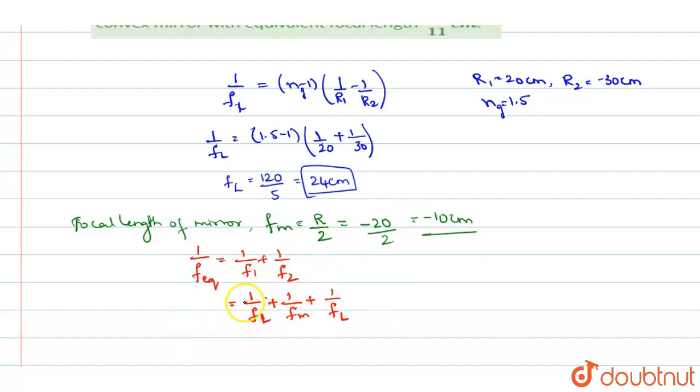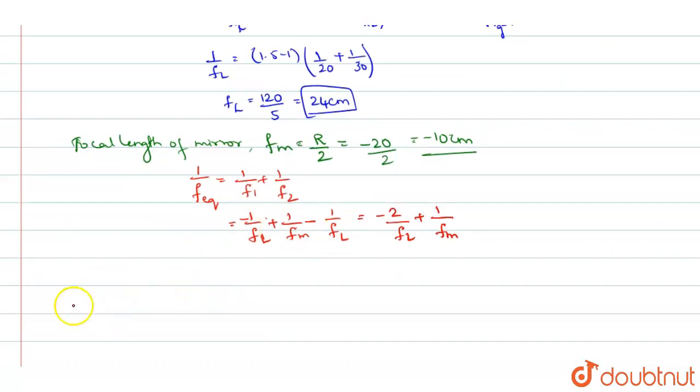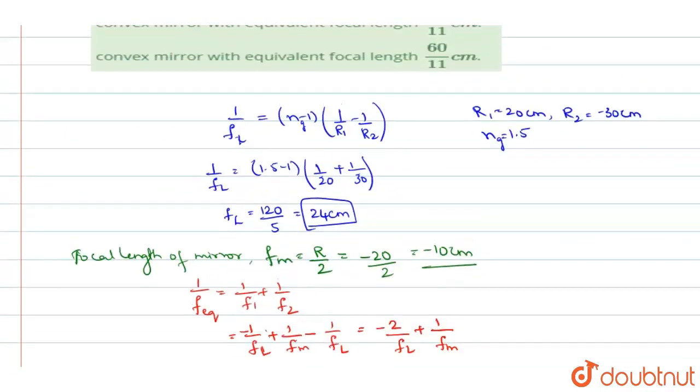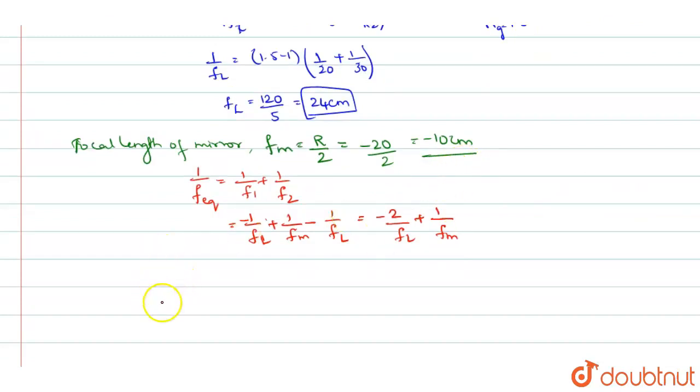So combination of these two you will get it as minus 1 by fL minus 1 by fL here also. Because it is according to the sign convention, you will get both as minus. So it becomes minus 2 by fL plus 1 by fM. So this gives you the focal length equivalent focal length and substituting for fL and fM. See, fL is how much? fL we have got it as 24 and fM is minus 10. Substituting over here, you will get it as f equivalent will be equal to minus 2 by 24 plus 1 by minus 10. So f equivalent comes out to be minus 60 by 11 centimeter.